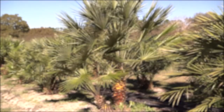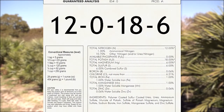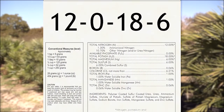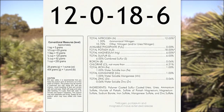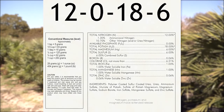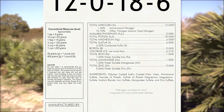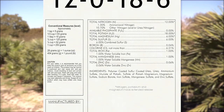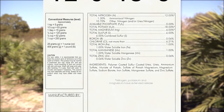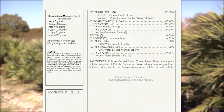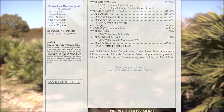For palms, fertilizers with a ratio of 4-0-6-2 are used unless a soil test indicates the need for phosphorous application. The nitrogen, potassium, and magnesium nutrient sources release nutrients for an extended period of time.